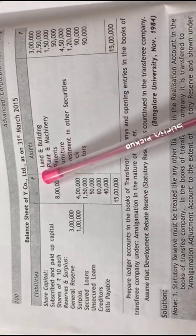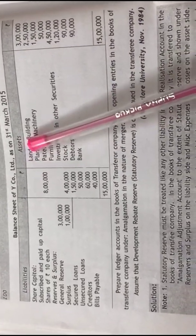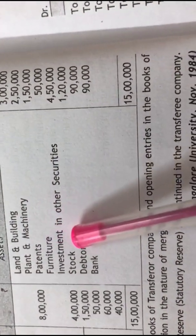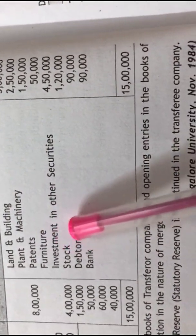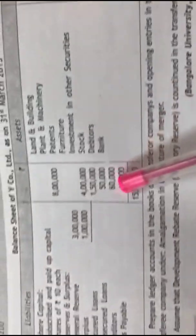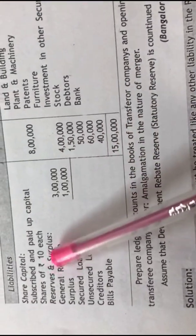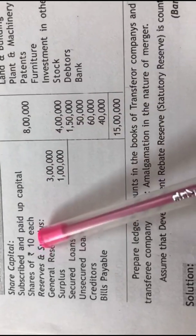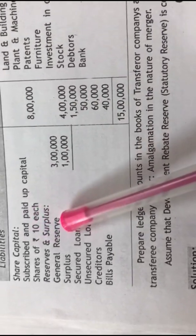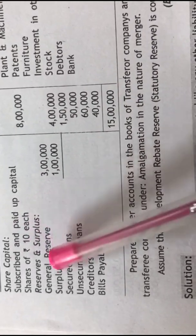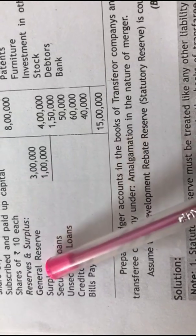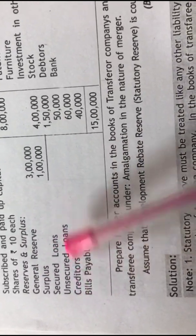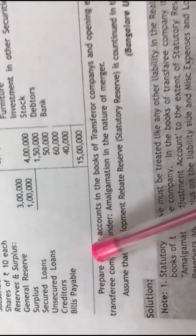Similarly, we have the balance sheet of Y Company Limited. On the asset side you have land and building, plant and machinery, patents, furniture, investment, stock, debtors and bank. On the liability side you have shares of 8 lakh, which means 10 rupees is the face value. Under reserves and surplus you have general reserve and surplus, then secured loans, unsecured loans, creditors and bills payable.